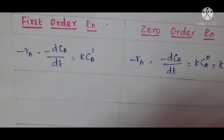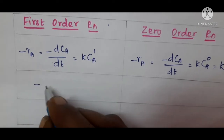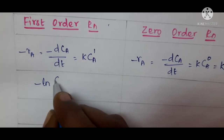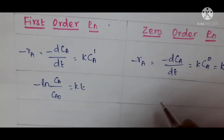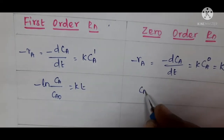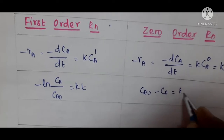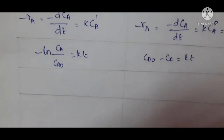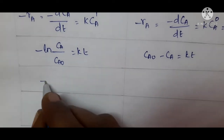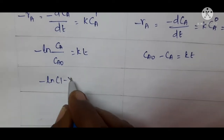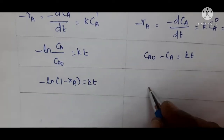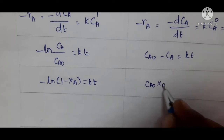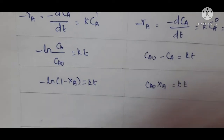Next, we will see the formulas. The integrated rate expression in terms of concentration for first order reaction is: minus ln of Ca divided by Ca0 is equal to kt. For zeroth order, it is Ca0 minus Ca is equal to kt. In terms of conversion, for first order it is minus ln of (1 minus Xa) equals kt, and for zeroth order it is Ca0 times Xa equals kt.